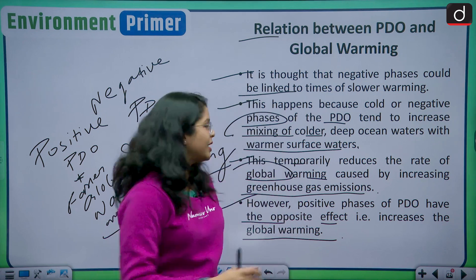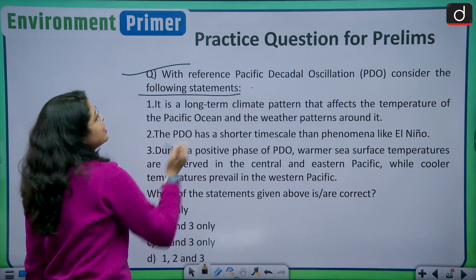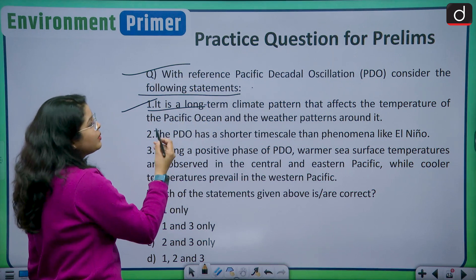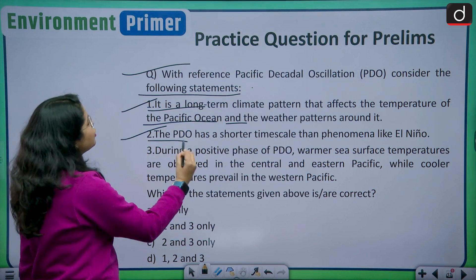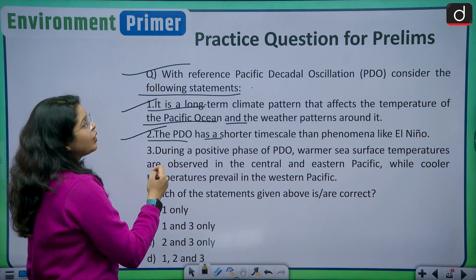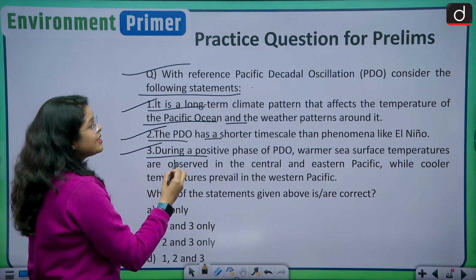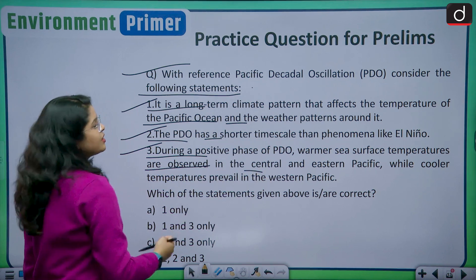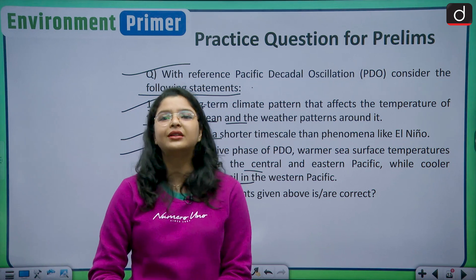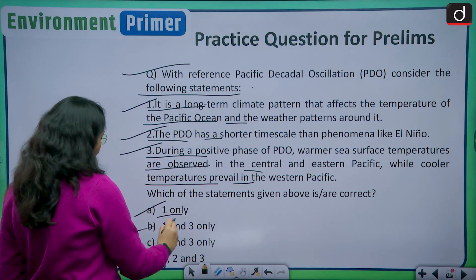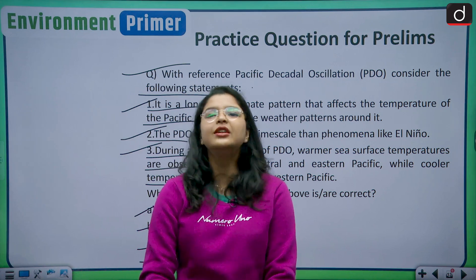Now let us discuss a practice question for prelims. With reference to the Pacific Decadal Oscillation, consider the following statements: Statement 1 — it is a long-term climate pattern that affects the temperature of the Pacific Ocean and the weather pattern around it. Statement 2 — the PDO has a shorter time scale than phenomena like El Niño. Statement 3 — during a positive phase of PDO, warmer sea surface temperatures are observed in the central and eastern Pacific while cooler temperatures prevail in the western Pacific. Which of the statements given above is/are correct? Options: (a) 1 only, (b) 1 and 3 only, (c) 2 and 3 only, (d) 1, 2 and 3. Kindly drop your answers in the comment box below.